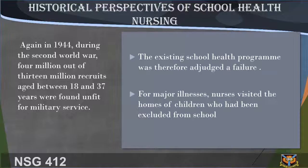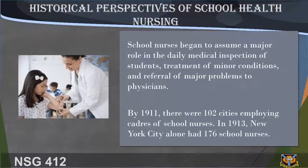The efforts that followed culminated in the present status of school health in Europe and America. For major illnesses, nurses visited the homes of children who had been excluded from school because of illness or infection, educated parents on their child's condition, provided information on available medical and financial resources, and urged parents to have their child treated and returned to school. School nurses began to assume a major role in the daily medical inspection of students, treatment of minor conditions, and referral of major problems to physicians.